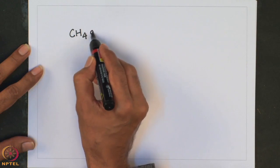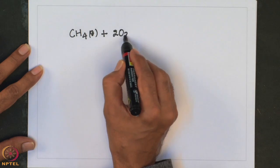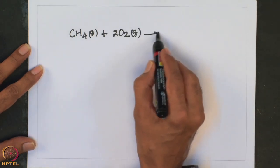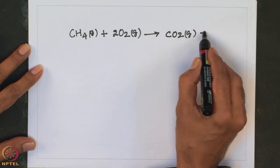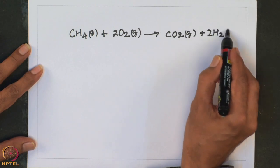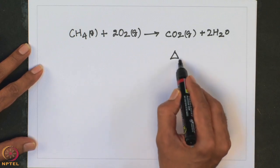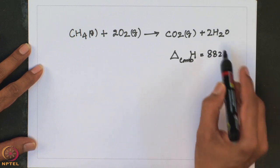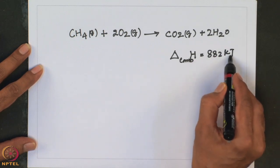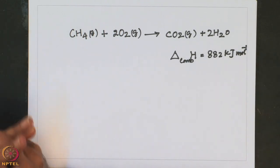Essentially, we burn methane. The combustion enthalpy is approximately -890 kJ/mol. This indicates the exothermic nature of this reaction.